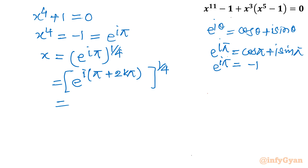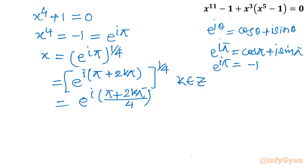Now I can write the general solution as x equals e^(i(π + 2kπ)/4), where k belongs to the integers. This gives four solutions by putting k equal to 0, k equal to 1, k equal to 2, and k equal to 3.